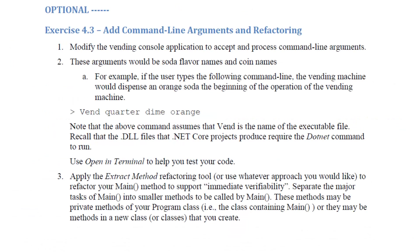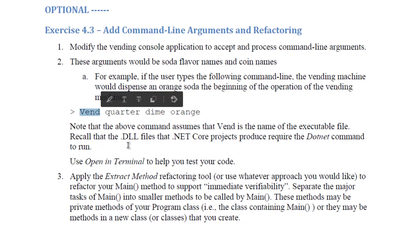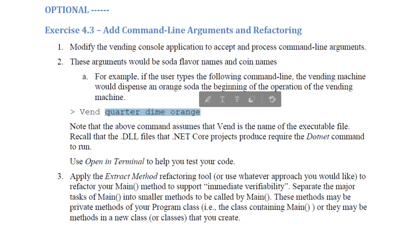Finally, optionally, we have exercise 4.3: adding command line arguments and refactoring. What we want to be able to do is allow users to use the command line to put in an order for a soda. The arguments themselves would be strings representing the flavor names and the coin names. So in the example, where vend is my executable, I put in a quarter and a dime and ask for an orange soda.